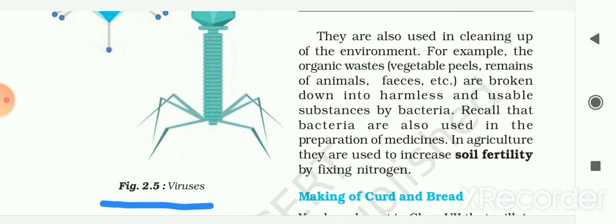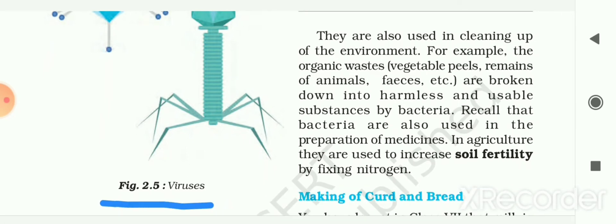They are also used in cleaning up of the environment. For example, organic waste such as vegetable peels, remains of animals, and feces are broken down into harmless and usable substances by bacteria. Bacteria are also used in the preparation of medicines. In agriculture, they are used to increase soil fertility by fixing nitrogen. The first use we will look at is the making of curd and bread.